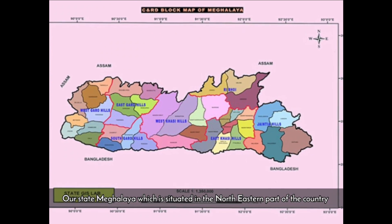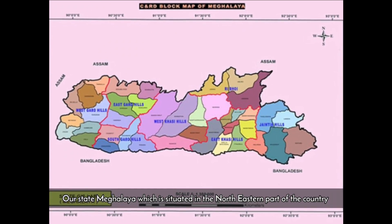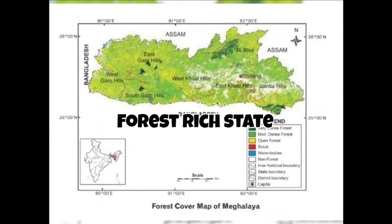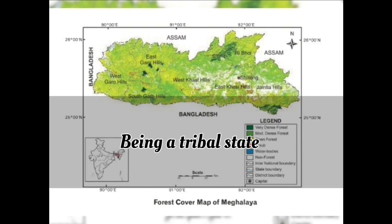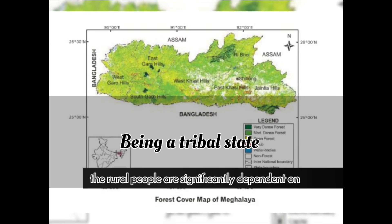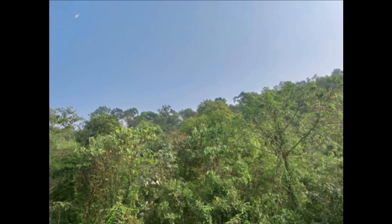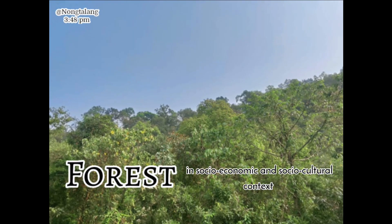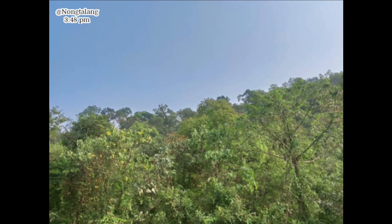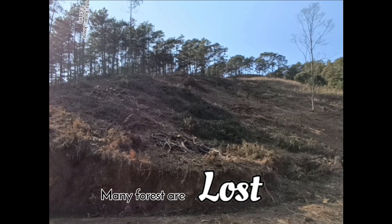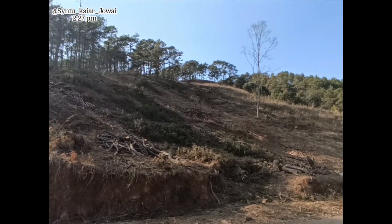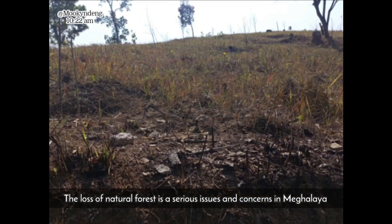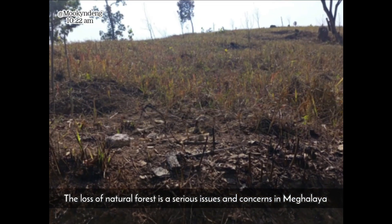Our state Meghalaya, which is situated in the northeastern part of the country, is a forest-rich state. Being a tribal state, the rural people are significantly dependent on forests in socioeconomic and socio-cultural contexts. But as time flies, many forests are lost. Since many people depend on forests, the loss of natural forests is a serious issue and concern in Meghalaya.